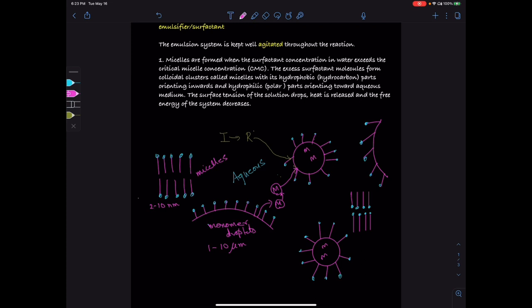Again, we can draw one more example where the initiator forms the radicals and the radical enters the micelle particle that has monomer molecules and chain propagation starts.